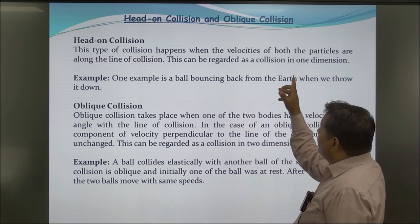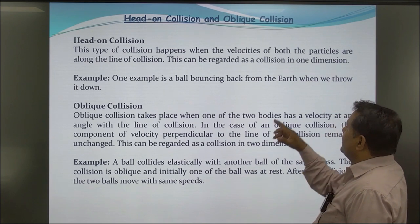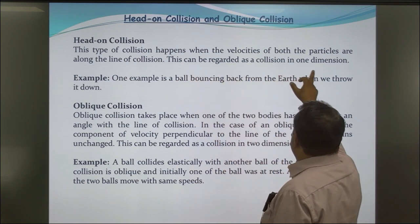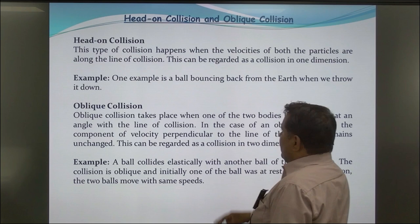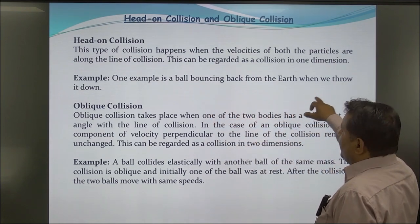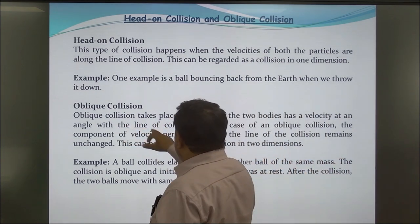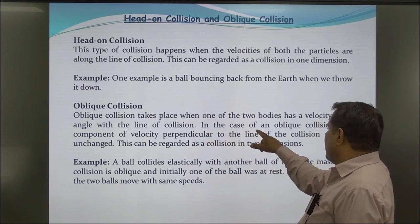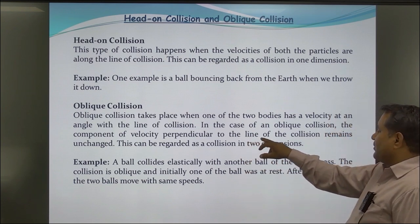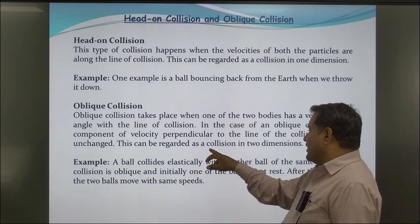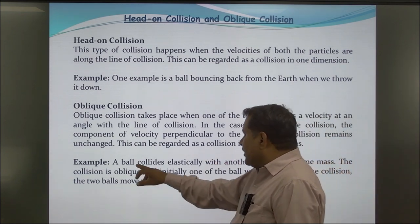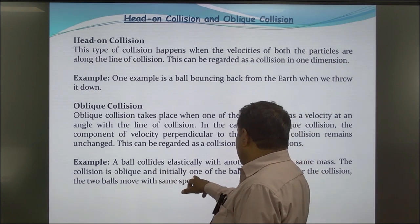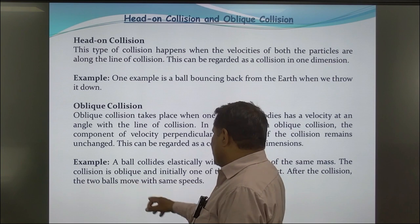Head-On Collision and Oblique Collision: Head-on collision happens when the velocities of both particles are along the line of collision; this can be regarded as a collision in one dimension. For example, a ball bouncing back from the earth when thrown down. Oblique collision takes place when one of the two bodies has a velocity at an angle with the line of collision. In oblique collision, the component of velocity perpendicular to the line of collision remains unchanged; this is regarded as a collision in two dimensions. For example, a ball colliding elastically with another ball of the same mass, where initially one ball was at rest, and after the collision both balls move at an angle to each other.